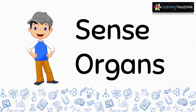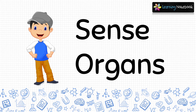Now students, sense organs are another important set of external body parts that help us to feel and sense the things around us. Eyes, ears, nose, tongue and skin are our five sense organs. So, let's understand them one by one.